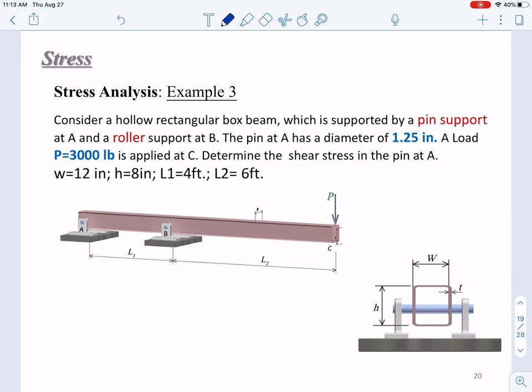The dimensions have been summarized here. So, let's analyze this structure first of all. It's said that at point B, it's a roller support. The roller support should be like this. At point A, it's a pin support. You should be familiar with the meanings of these different types of support. What does pin support mean? What does roller support mean?